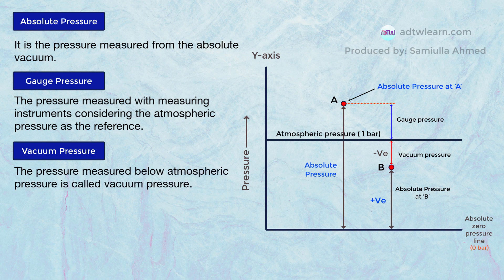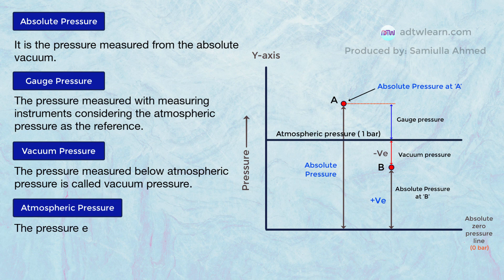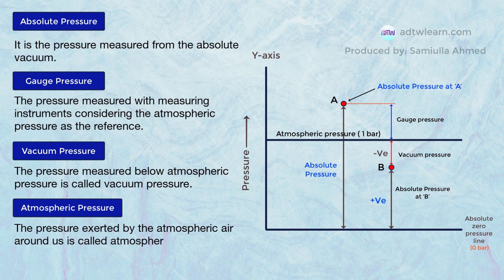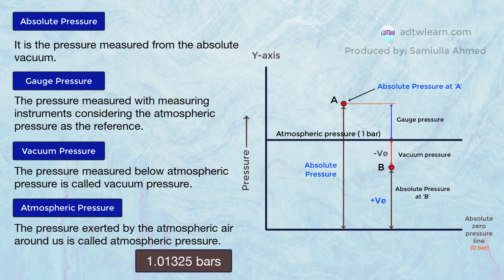At last, we have atmospheric pressure. The pressure exerted by the atmospheric air around us is called atmospheric pressure. The value of atmospheric pressure, or the pressure exerted by the air at sea level, is 1.01325 bars, or 14.6959 psi.